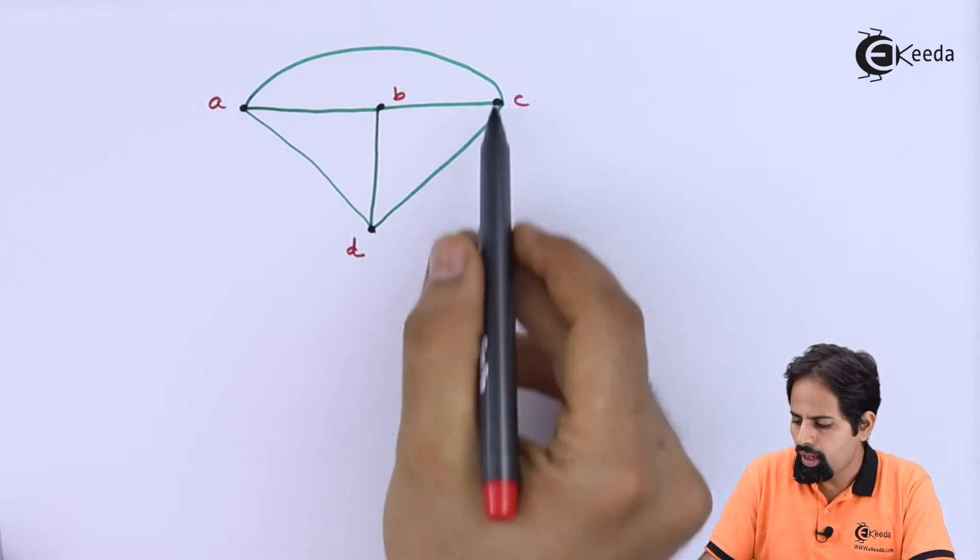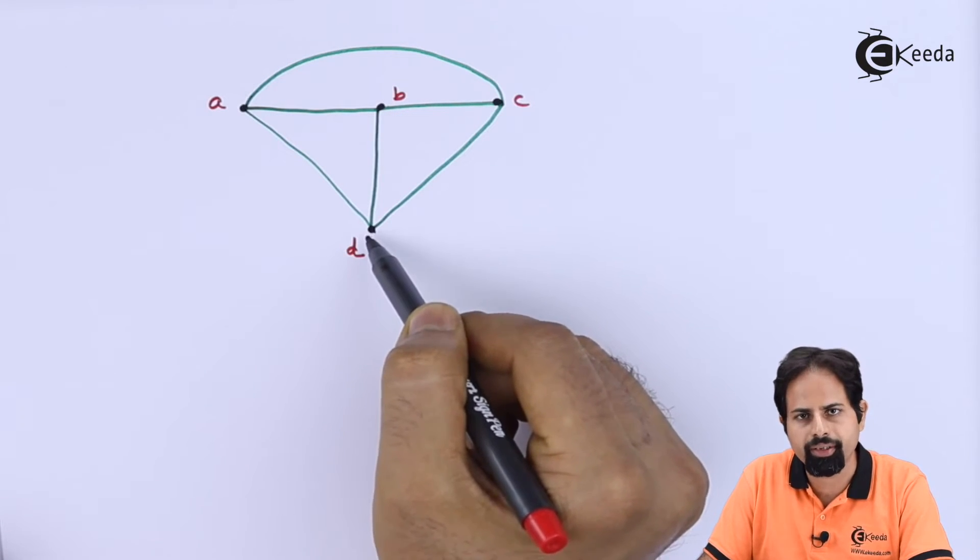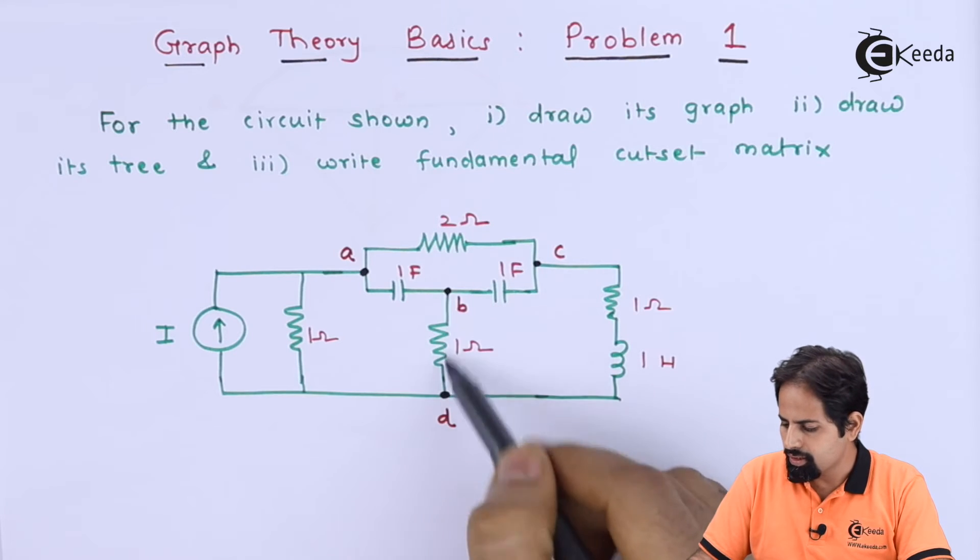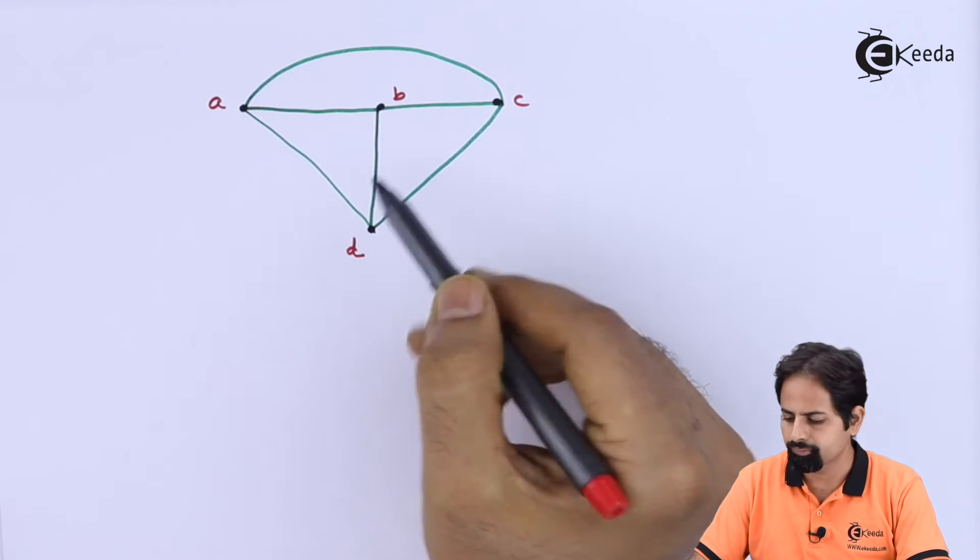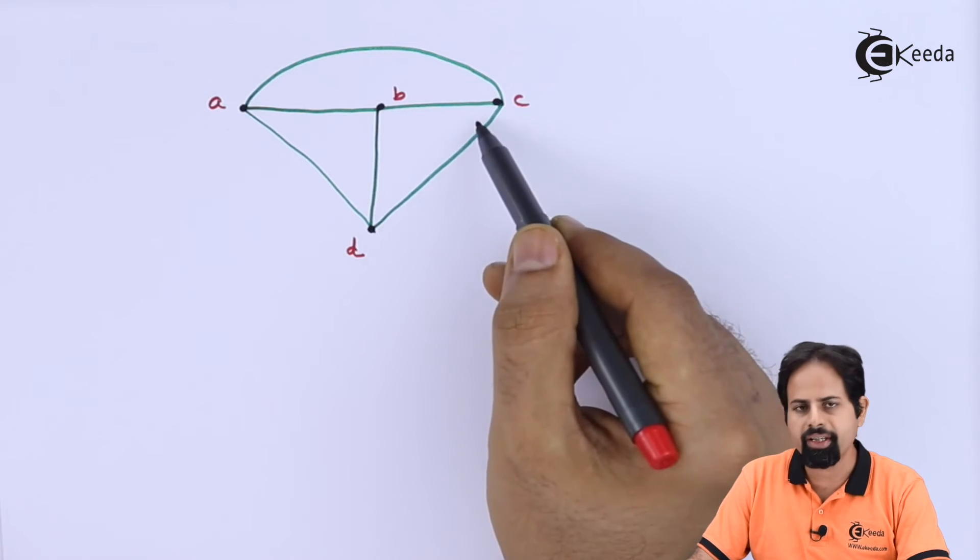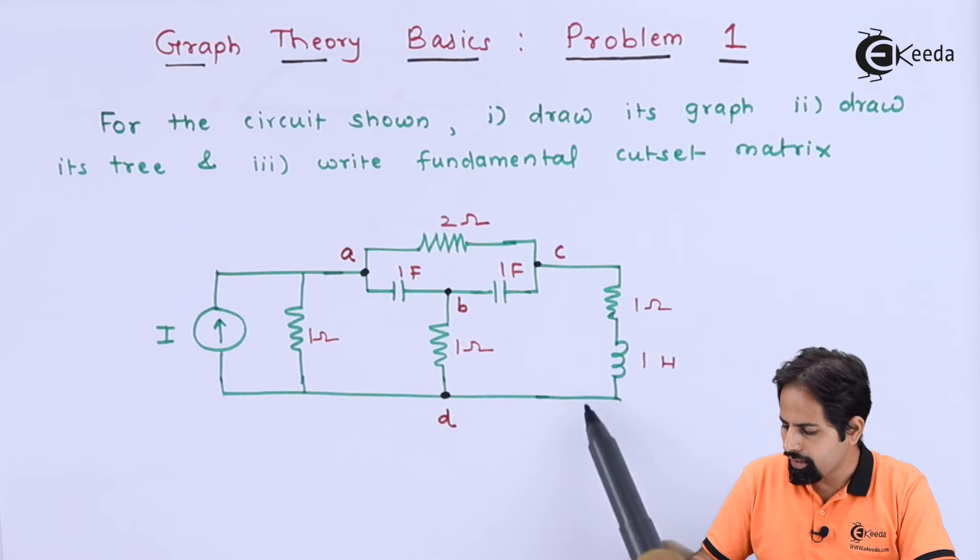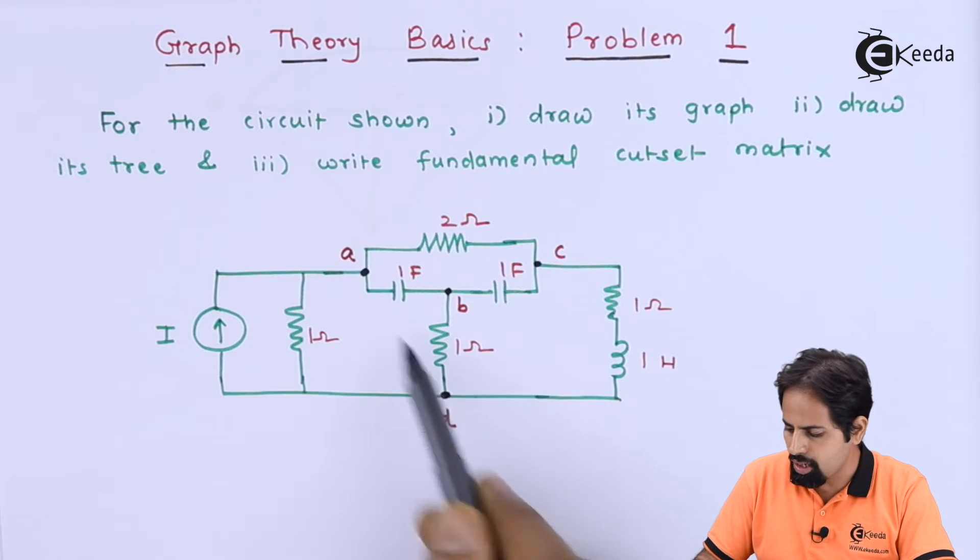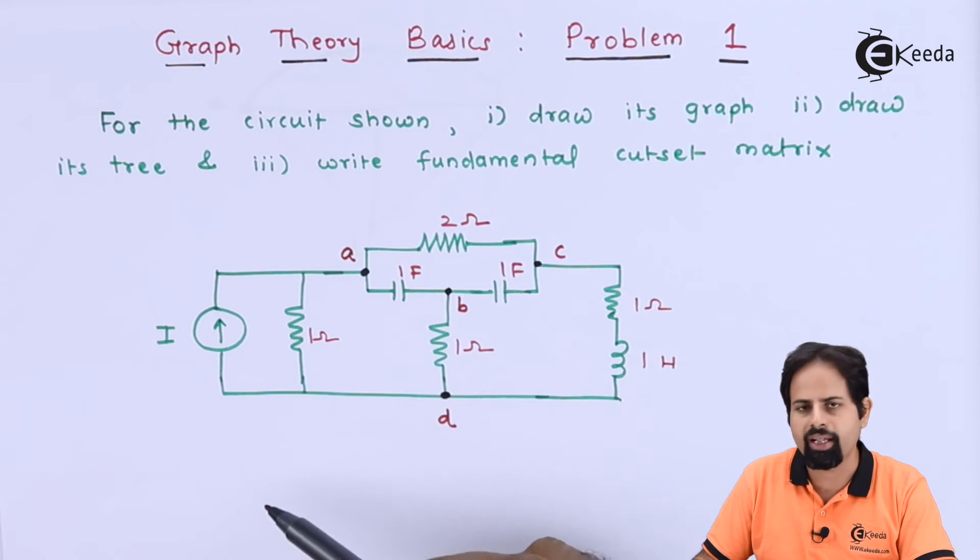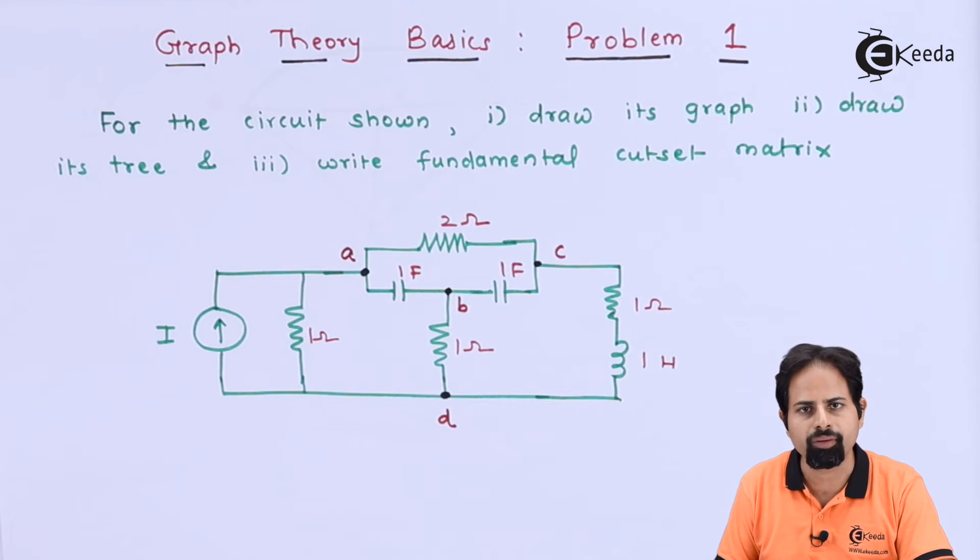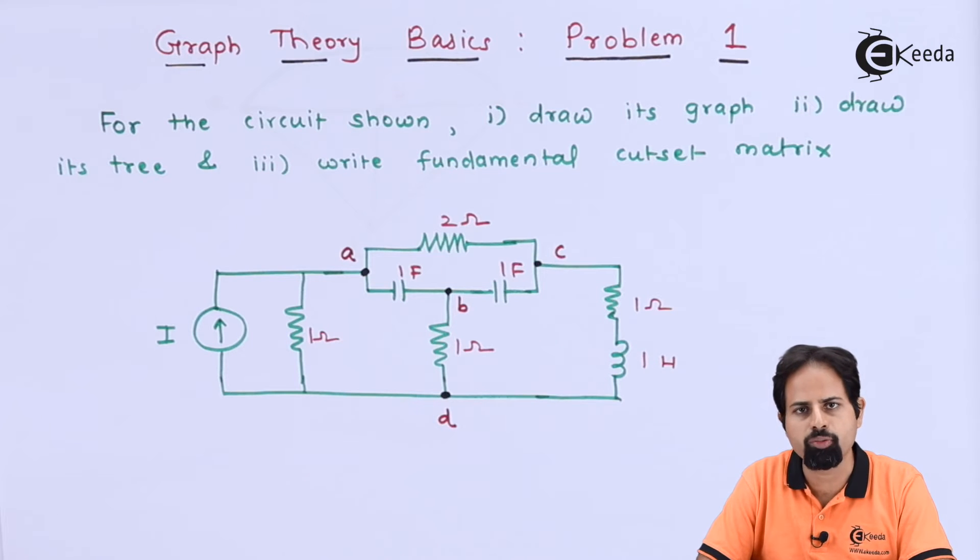So here you can see, I have drawn a graph, B and D, we will check it with the original circuit. B and D, this resistance, just represented by a line segment. Then between C and D also, there is line segment. So here you can see between C and D, these elements and so on. Between A and D also, one line segment will be there. And between A and C, also there is one line segment. This current source is not going to be in picture. Of course, directions are what we can take. So we will assume the directions.